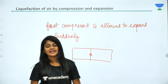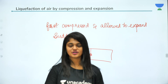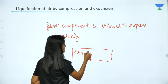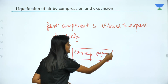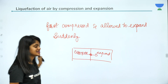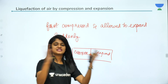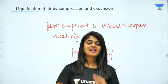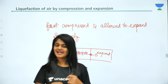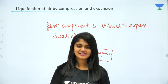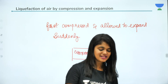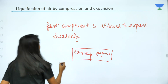This is the principle of the Joule-Thomson effect. We compress the air and allow it to expand — temperature drops. After repeating this process sufficiently, there is enough temperature drop that the air gets liquefied. This is how we liquefy air. Now we have got liquid air and we have to talk about its major components.